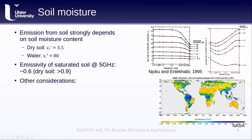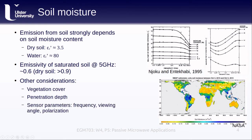Other things that we have to keep in mind for estimates of soil moisture are vegetation cover, penetration depth, and the different sensor parameters, including the frequency or wavelength, the viewing angle, and the polarization. All of these have an impact on what the sensor actually measures and whether we can effectively estimate the soil moisture content from those measurements.